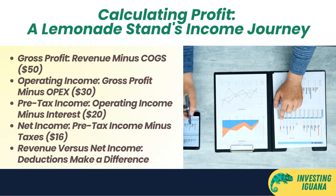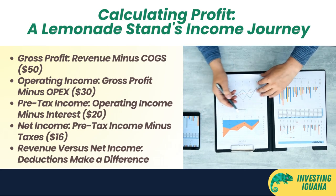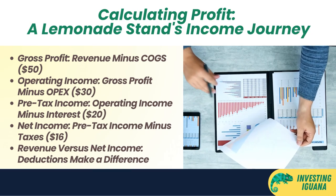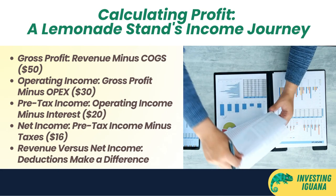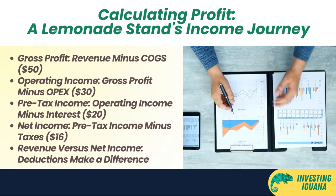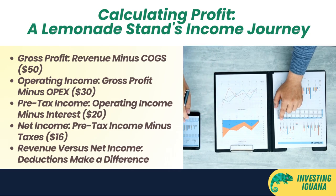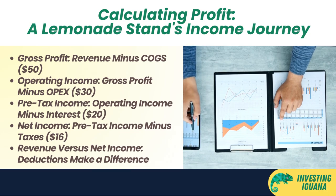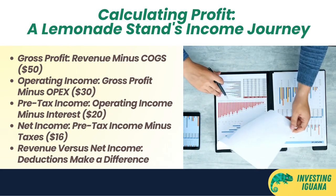For our lemonade stand: gross profit = $100 - $50 = $50; operating income = $50 - $20 = $30; pre-tax income = $30 - $10 = $20; net income = $20 - (20% × $20) = $16. As you can see, your net income is much lower than your revenue because you have to deduct all your costs and expenses along the way.